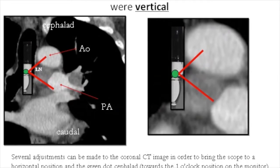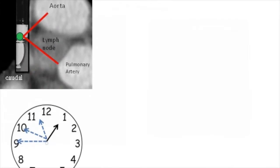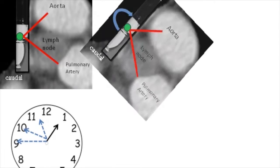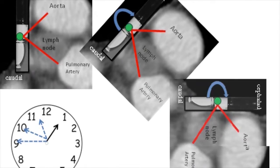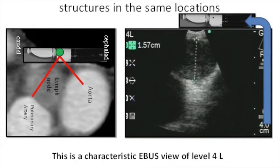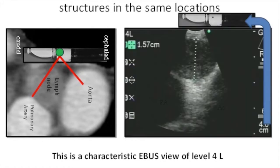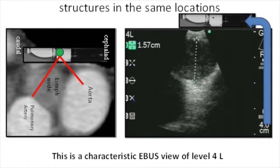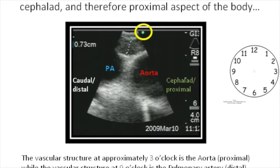Several adjustments can be made to the coronal CT image in order to bring the scope to a horizontal position and the green dot cephalad to match the EBUS image. Rotate the CT image clockwise to bring the scope to a horizontal position and the green dot towards 1 o'clock. The two images now correlate. Because the green dot is cephalad, the vascular structure at 3 o'clock is proximal and represents the aorta, while the vascular structure at 9 o'clock is more distal and represents the left pulmonary artery.